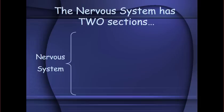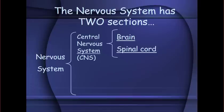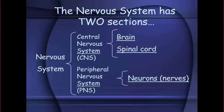The three structures of the nervous system are broken down into two sections. The first is the central nervous system, which is comprised of the brain and the spinal cord. The other part is the peripheral nervous system, which contains all the neurons throughout the rest of the body that are not specifically the brain and the spinal cord.